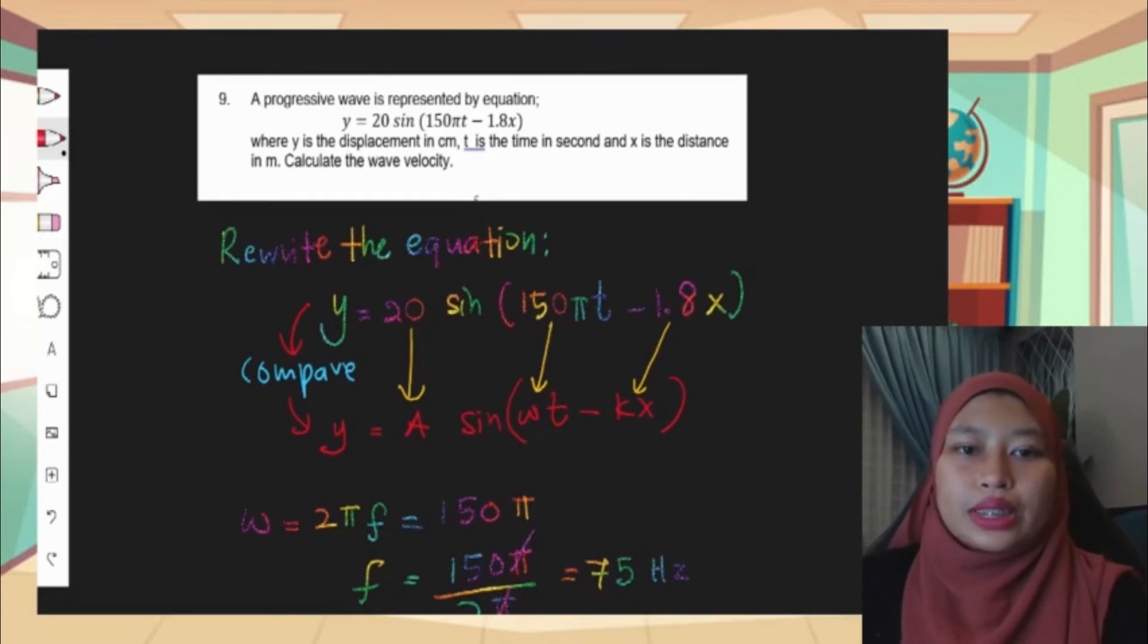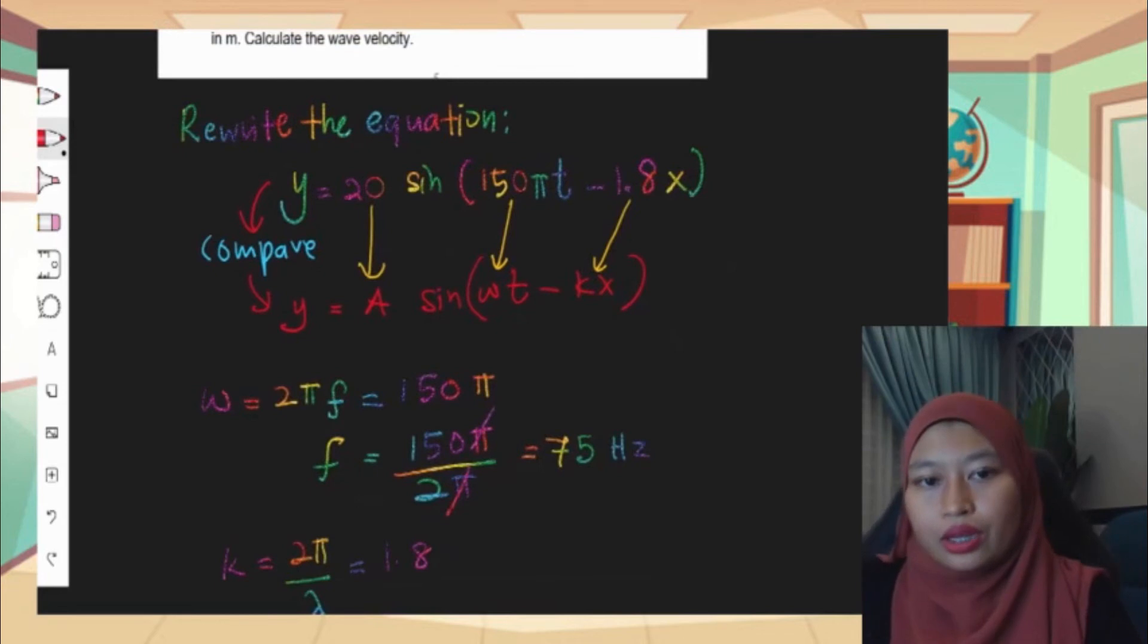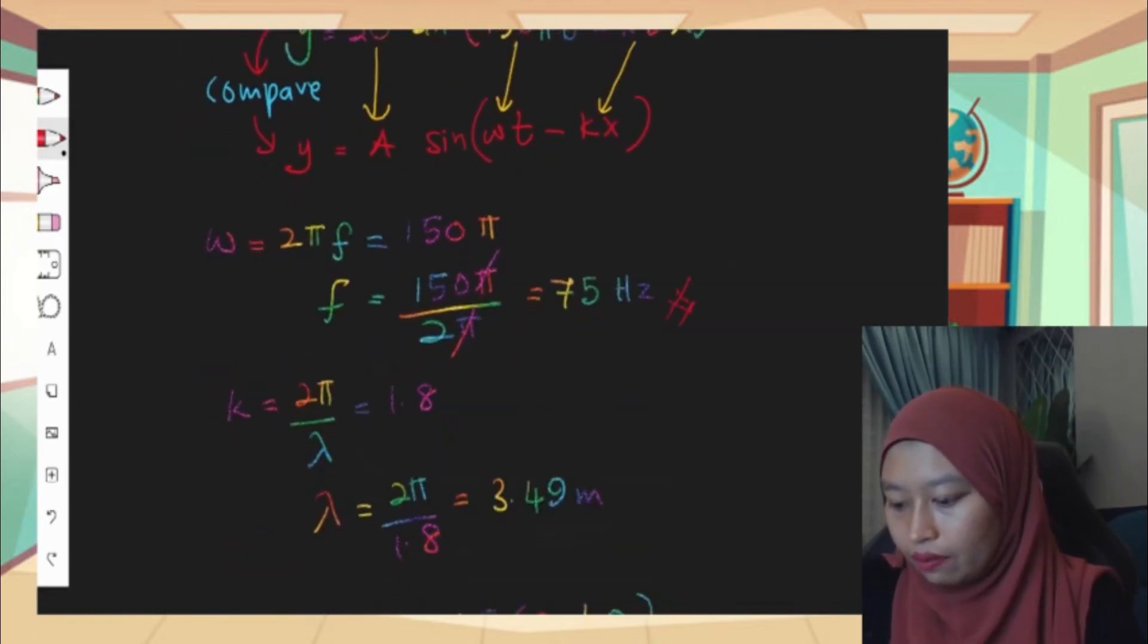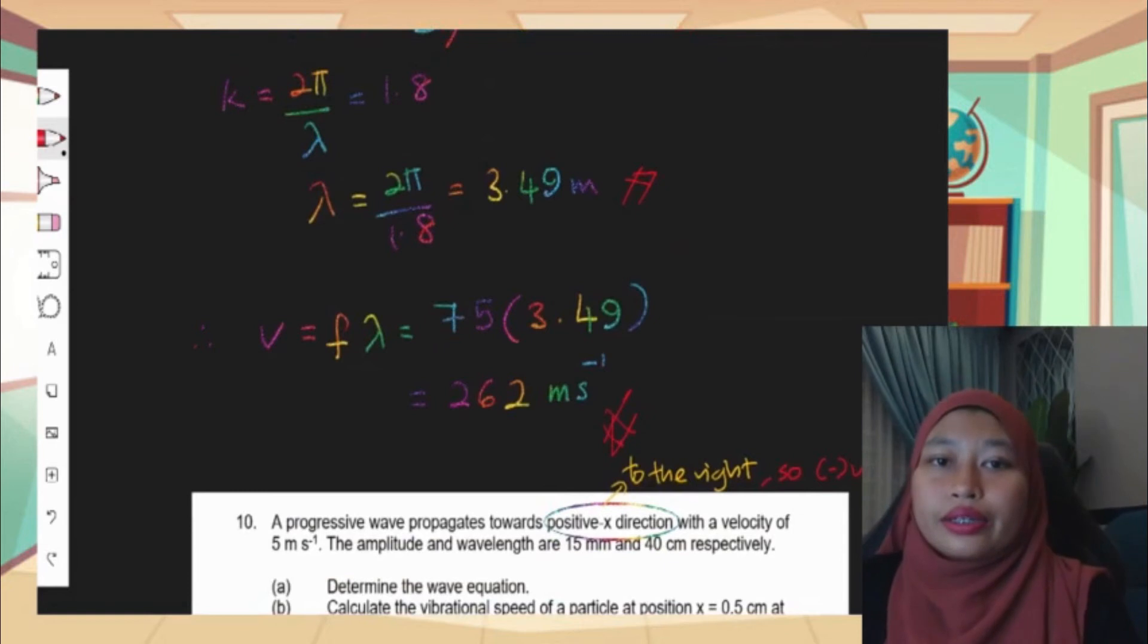For number 9, a progressive wave is represented by equation y equals 20 sine 150 pi t minus 1.8x, where y is the displacement in cm, t is the time in second, and x is the distance in meter. So we can calculate the wave velocity. Again I use the technique of comparison. I rewrite again the equation given and I compare with the general equation. As you can see here, I'm comparing it, so I will get the value of A, the value of omega, and the value of k directly. From that information we can get frequency, we can get omega, and finally we can calculate the wave velocity. So it's very easy, this technique.